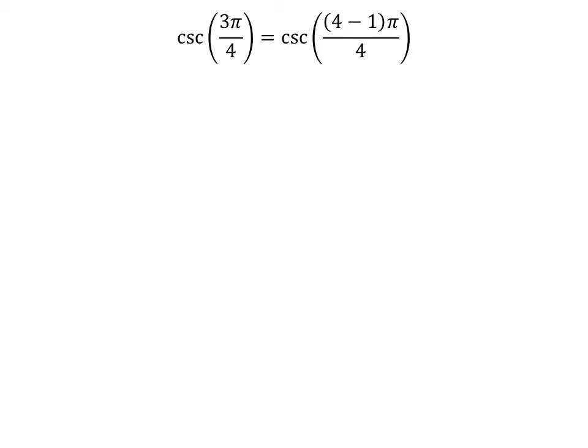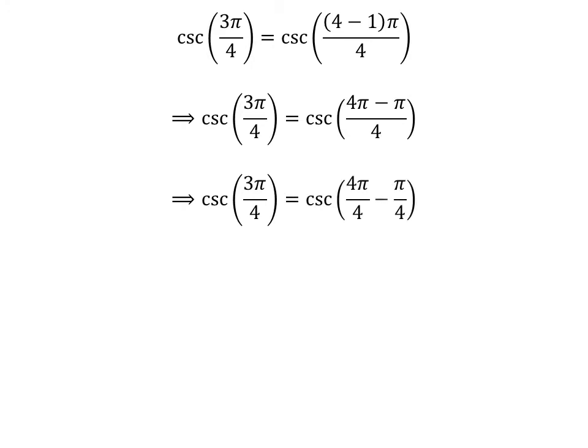We know 4 minus 1 is equal to 3. So, cosecant of 3 times pi upon 4 is equal to cosecant of 4 minus 1 times pi upon 4. Expanding the numerator, we get cosecant of 4 times pi minus pi upon 4. The fraction 3 times pi upon 4 can be expressed as the difference of two fractions, 4 times pi upon 4 and pi upon 4. Cancelling out the common factor gives us cosecant of pi minus pi upon 4.